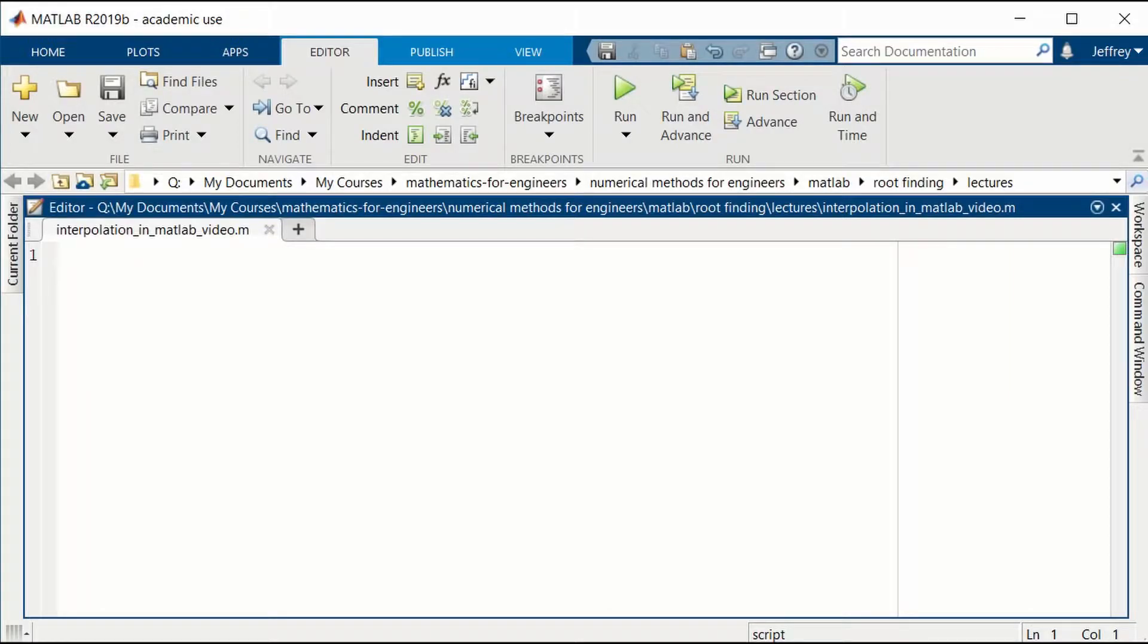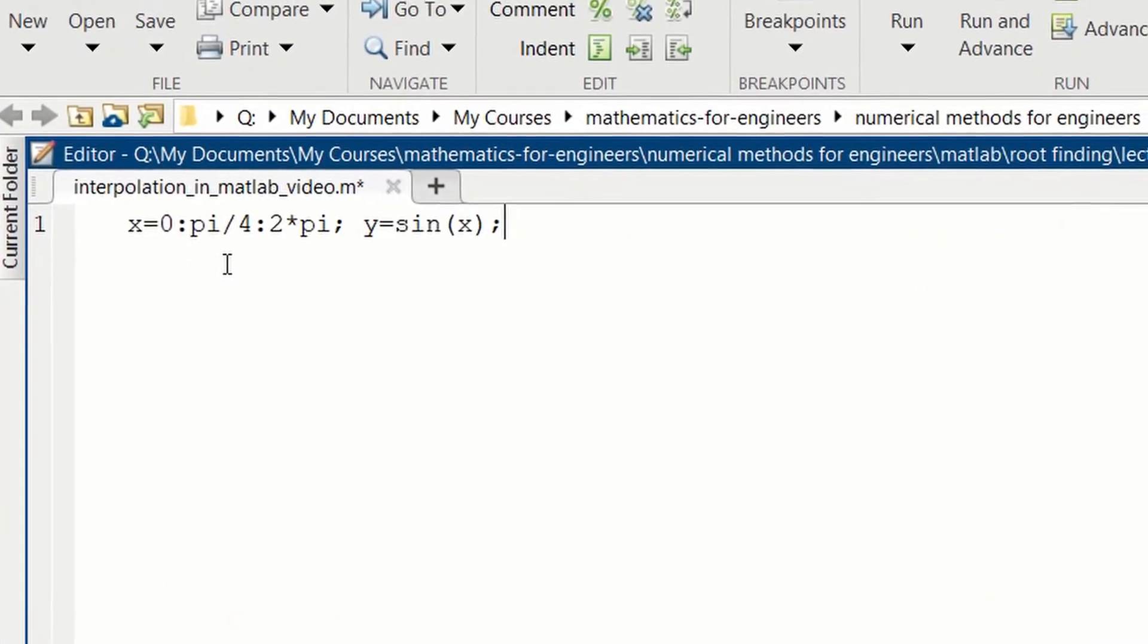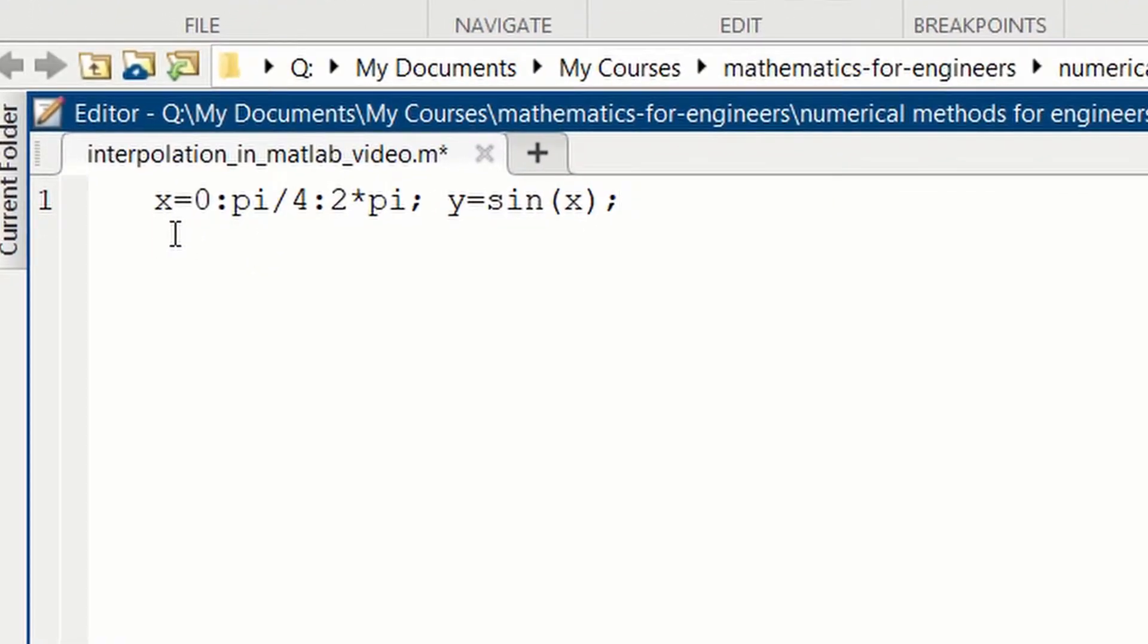Let's try out the interp1 function, set up some points and a function. Let's choose some points in x from 0 to 2pi, separated by pi over 4. So, 0, pi over 4, pi over 2, 3pi over 4, pi, etc. to 2pi. And then, the y will be the sine of these values of x.